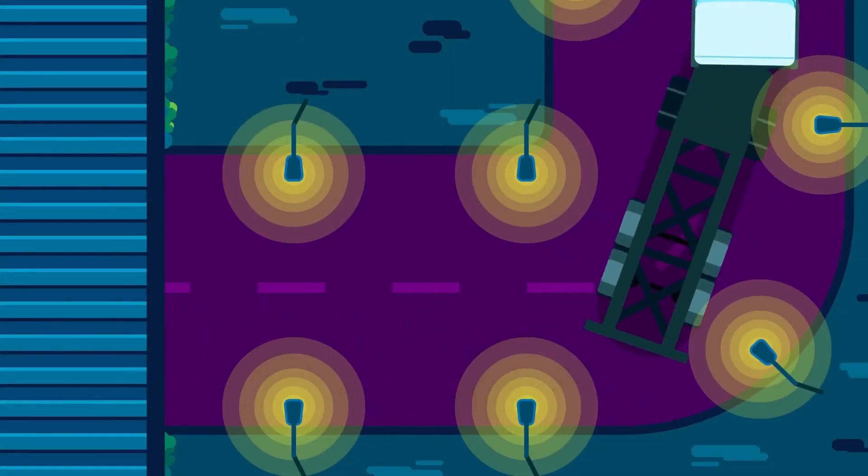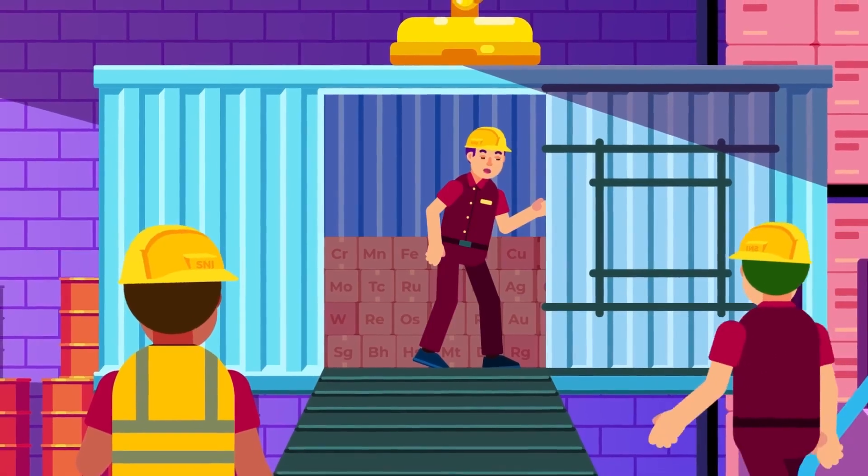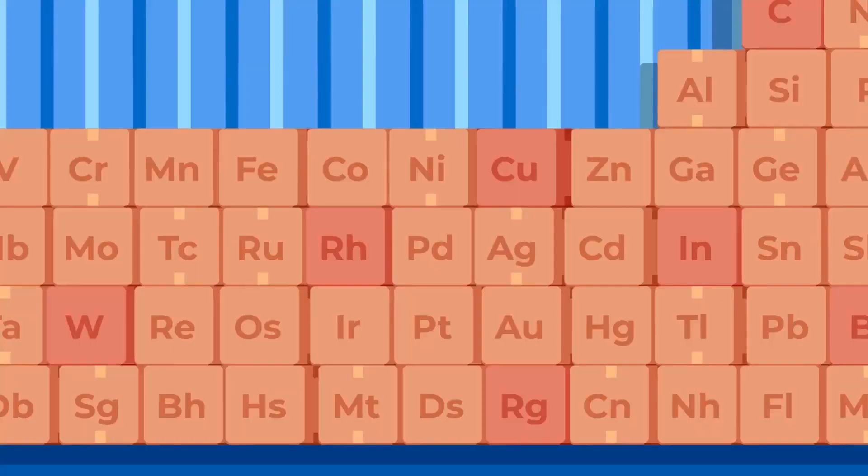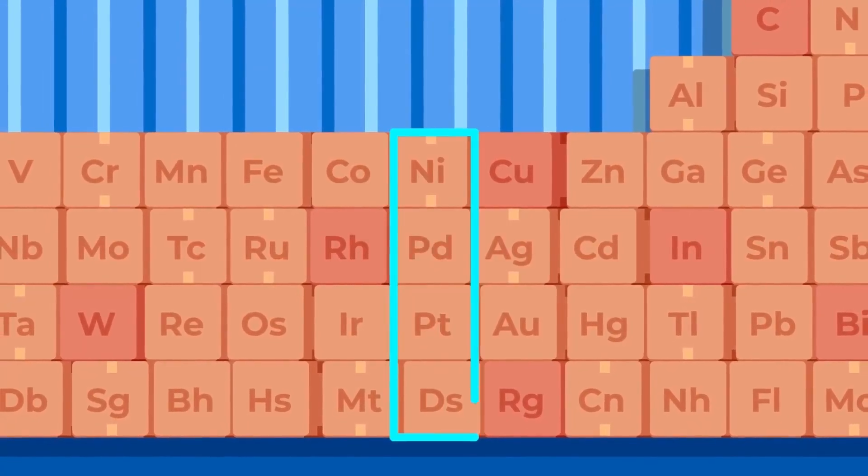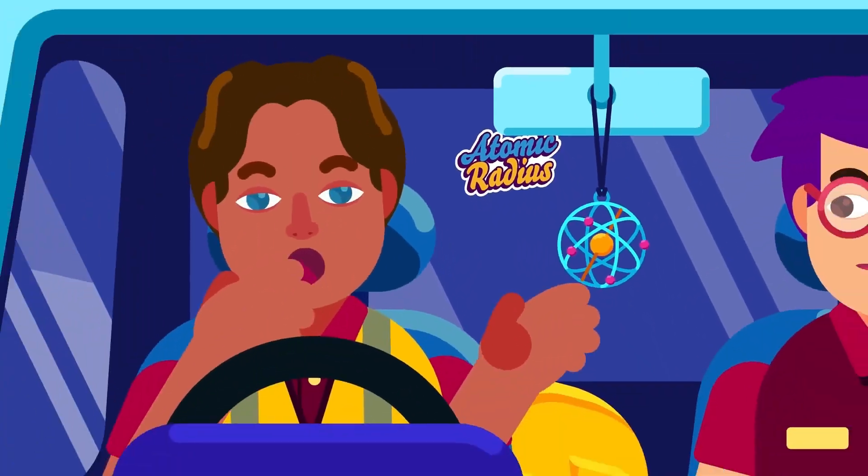We're going to continue our explanation from the row, or periods, of the periodic table discussed in the previous video, to the column, or group, of the periodic table. The periodic table arranges elements into groups with similar properties. One of the most important ones is atomic radius.